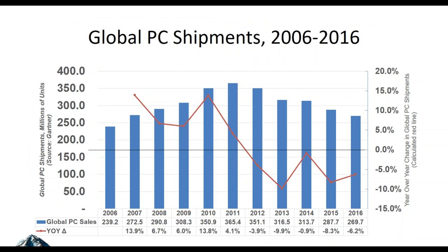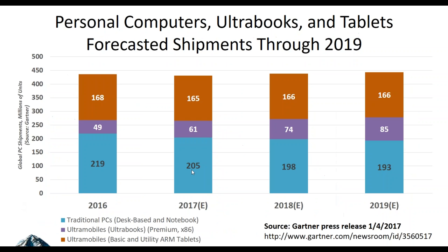Global PC shipments have been trending down, but we're still seeing 250 million-plus units shipping. The market has been shrinking, which makes sense — machines don't need to be replaced as often because there's enough horsepower in local machines and they're more reliable and lasting longer. Where in the old days we might have replaced every three years, I'm stretching some replacement recommendations out to four and five years. Traditional PCs show some decline, while ultramobiles show some growth, and ultramobile tablets are relatively stable.